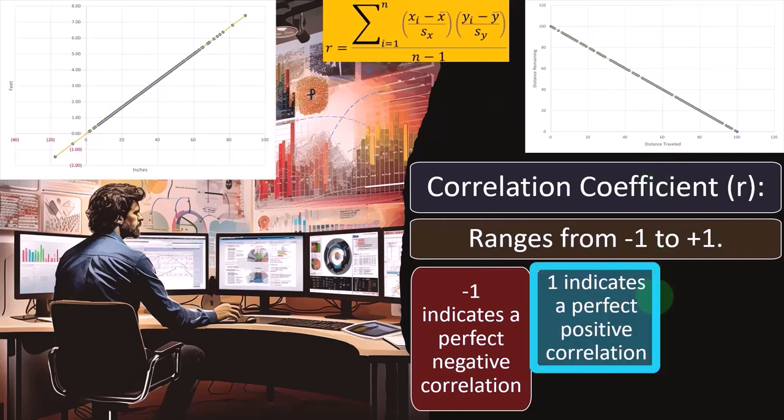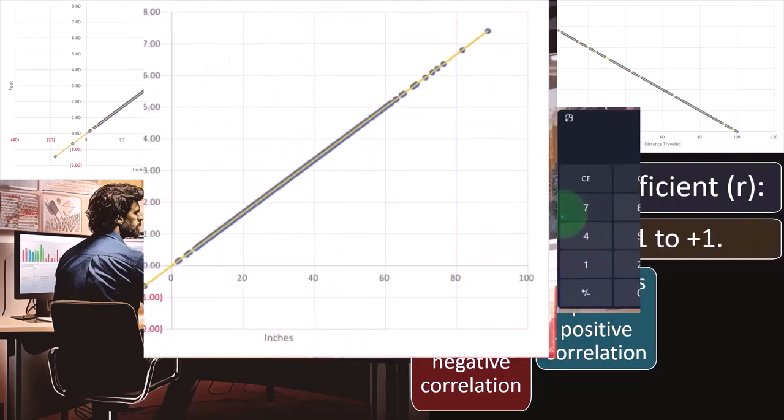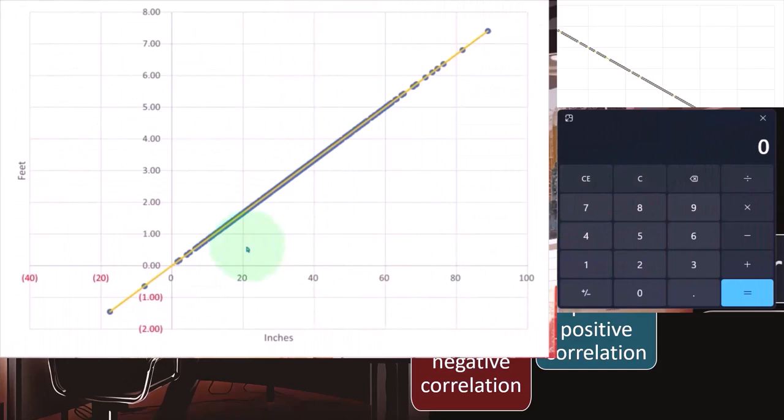So one indicates a perfect positive correlation. So now we have them going up. In this case, we're comparing feet and inches. Any kind of conversion will have a perfect kind of positive correlation. So obviously, if we said, for example, that we had one foot, one foot would be 12 inches. So if we went up one foot, we'd have 12 inches. If we went up two feet, we'd have around 24 inches.